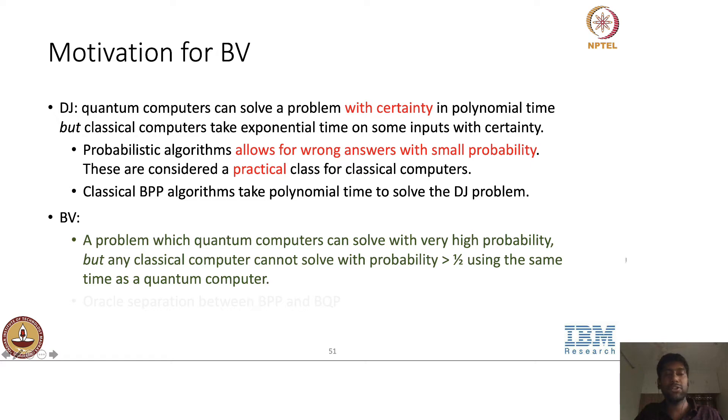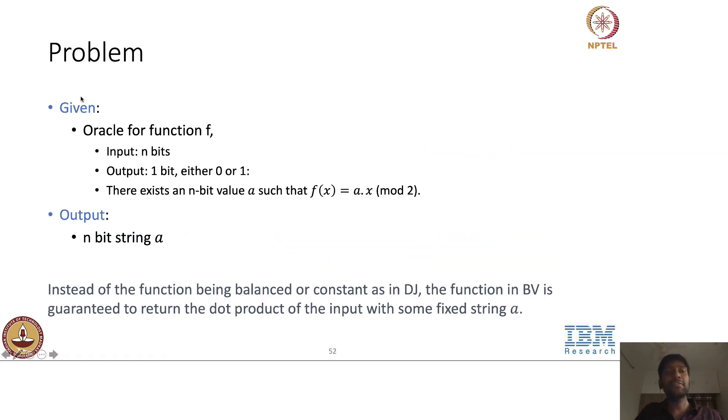But again, as I said for Deutsch-Jozsa, if you don't know, alright. So this is the problem statement that Bernstein and Vazirani came up with. Like we had for Deutsch-Jozsa, we again are given an oracle for a function f, which takes in n bits as input and outputs one bit, either 0 or 1.